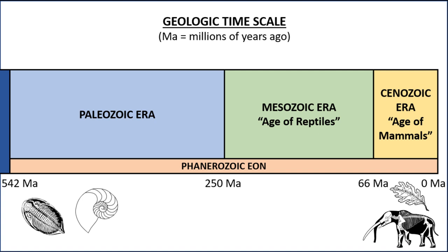Our paleontologists wanted to narrow down the age of the Gray site as much as possible. Could these be fossils from the ice age, hundreds of thousands of years ago? Or maybe they were from an early part of the Cenozoic era, tens of millions of years ago? When it comes to dating a fossil site — that is, figuring out how old it is — paleontologists have two main options: absolute dating and relative dating.